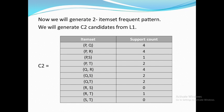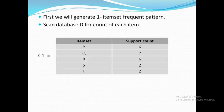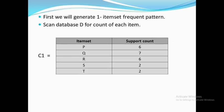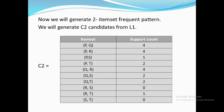Now we have to find out the support count of all these item sets. For item set PQ, the support count is 4. How is it calculated? We check our dataset again. The PQ item set is present at 4 positions: transactions T1, T4, T8, and T9. Hence the support count of pair PQ is 4. Similarly we find out the support count of all other pairs.